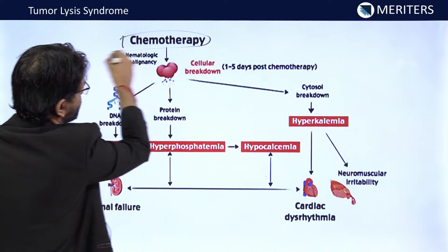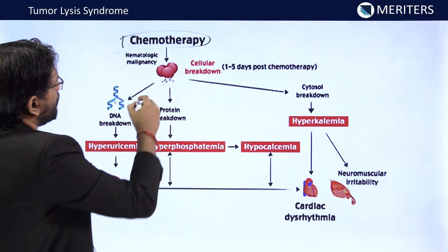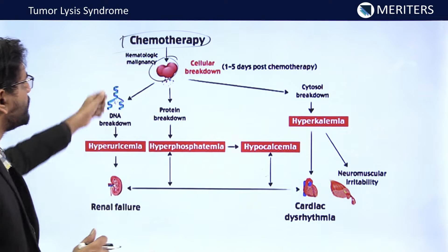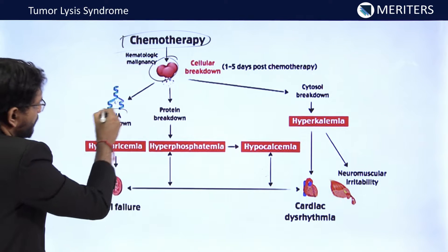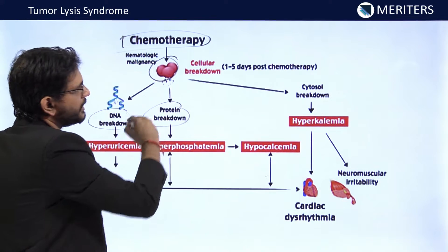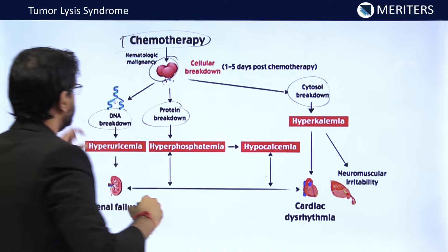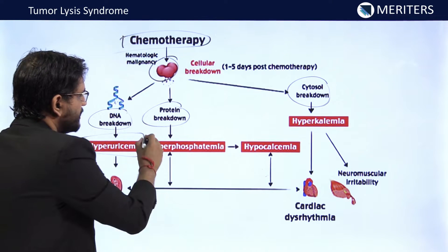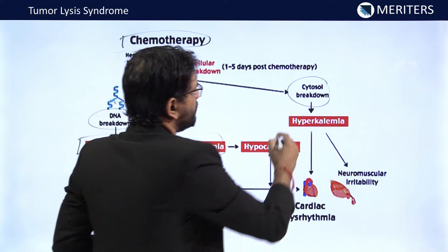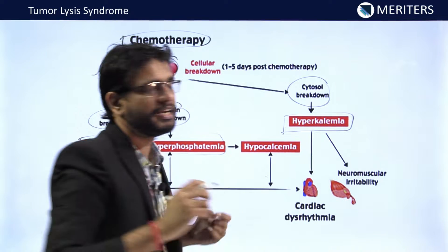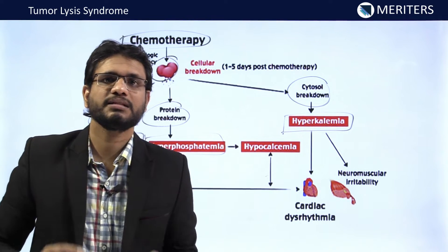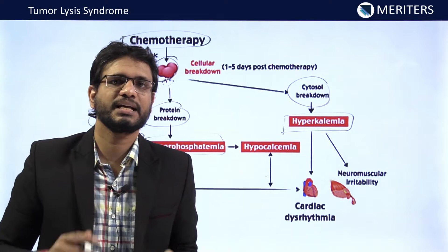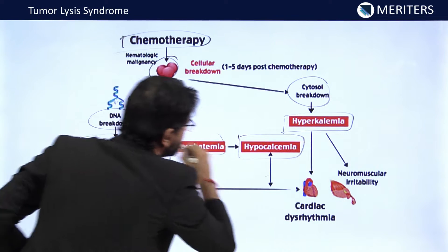Whenever there is a hematologic origin lymphoma and chemotherapy is given, after one to five days there will be breakdown of a large number of cells — including DNA breakdown, protein breakdown, and cytosol breakdown. DNA breakdown leads to hyperuricemia. Protein breakdown leads to hyperphosphatemia. Cytosol breakdown leads to hyperkalemia. In the kidney, calcium is exchanged with potassium, so increased reabsorption of potassium means calcium is lost, leading to hypocalcemia.